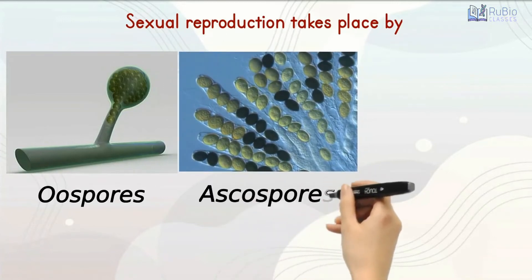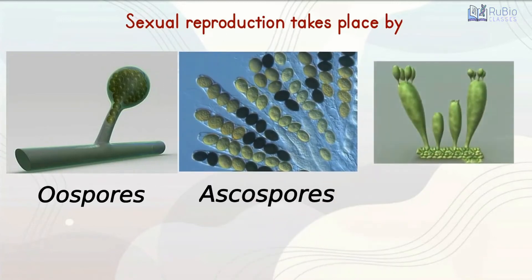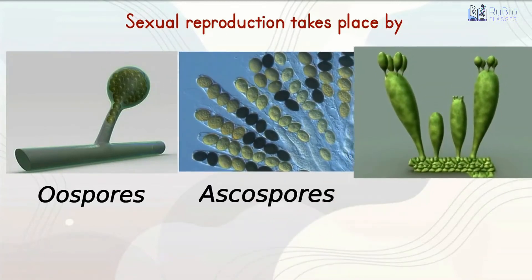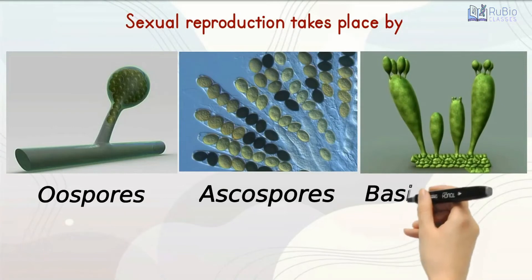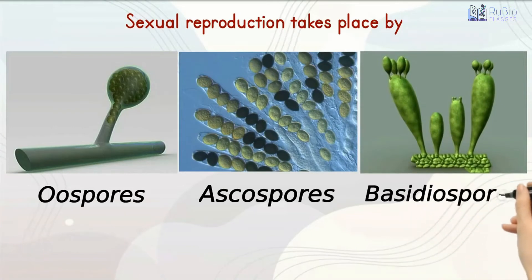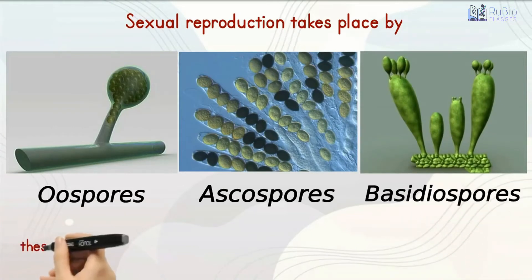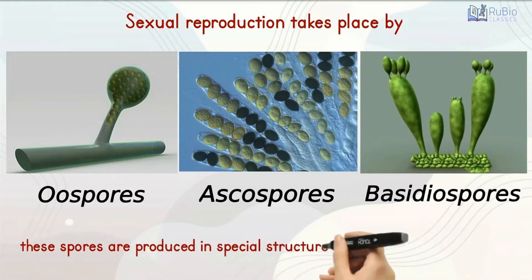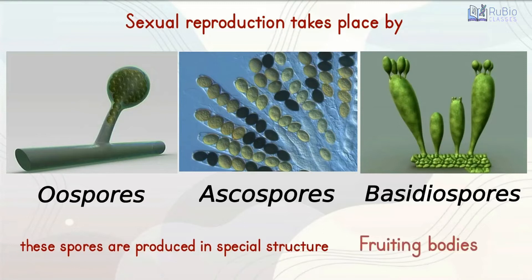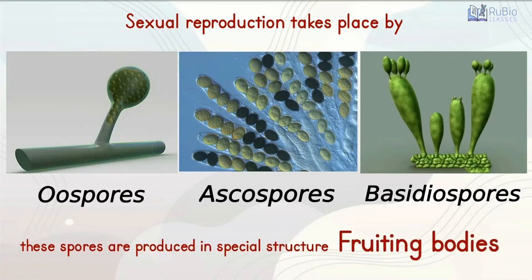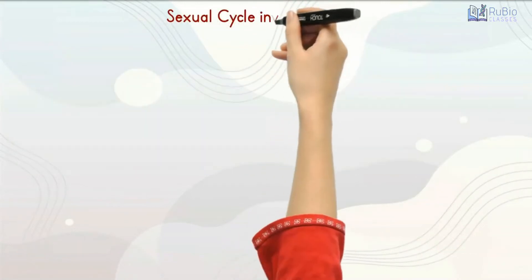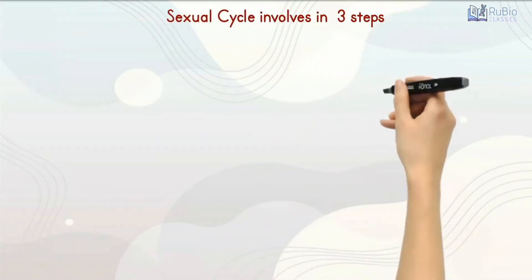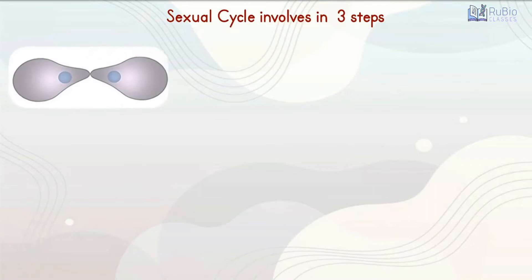ascospores, and basidiospores. These various spores are produced in special structures called fruiting bodies. The sexual cycle involves the following three steps.